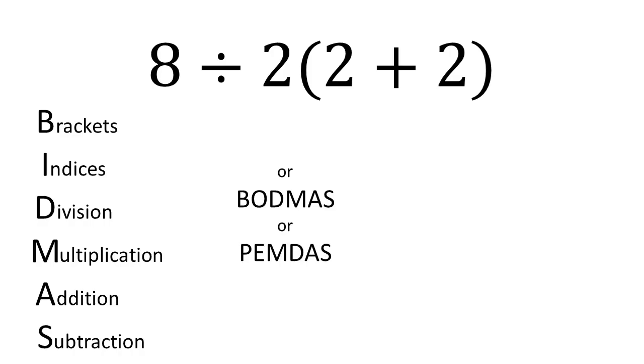Now, some people remember these using the words BODMAS or PEMDAS. These are exactly the same. The O in BODMAS just stands for order instead of indices, and PEMDAS, the first two letters are parentheses, another word for brackets, and exponents, another word for indices.